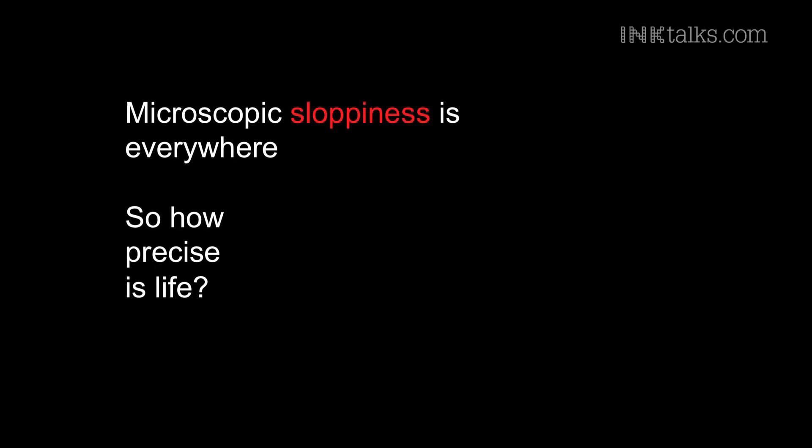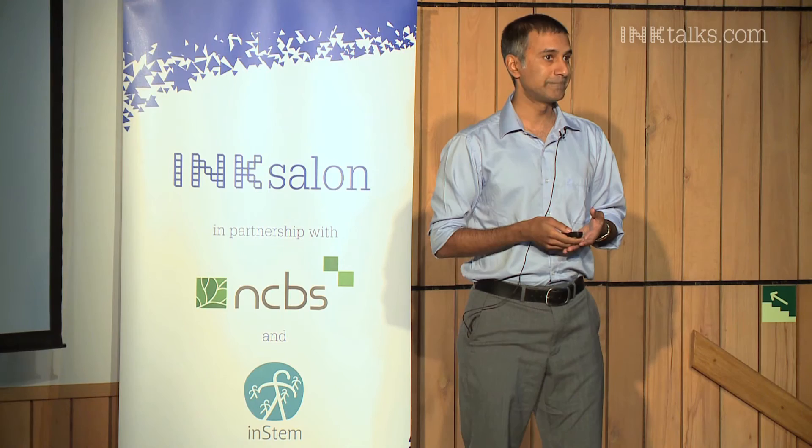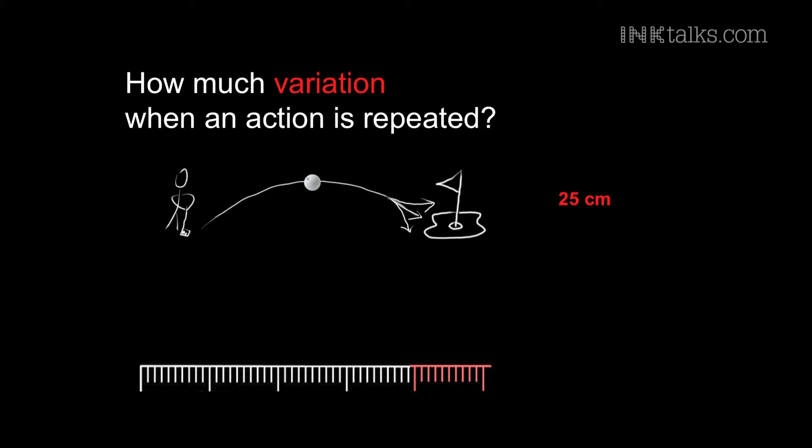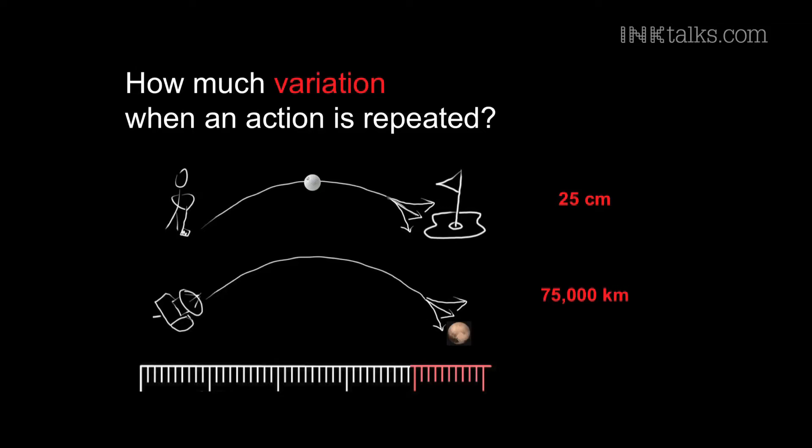Given this fact, we can ask: how precise is life? Before we can answer that, we have to decide how to quantify precision. To think about precision, you have to think about what happens when the same action is repeated twice. Imagine a golfer — she stands up, takes a swing, hits the ball, and the ball goes somewhere. She puts another ball down, takes a swing, and the ball goes somewhere else. Where will the second ball land? How far from the first one? Even if you remove wind and all environmental variables, even the best professional golfer will probably not get it to within one foot of the original ball. Let's say that's the level of variance — about a foot, or 25 centimeters.